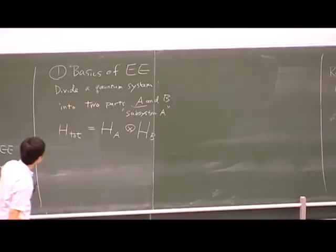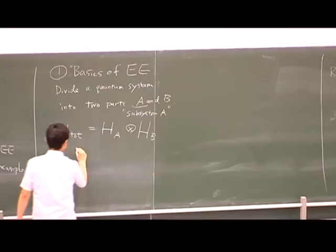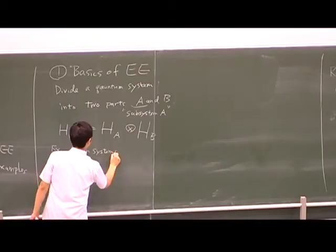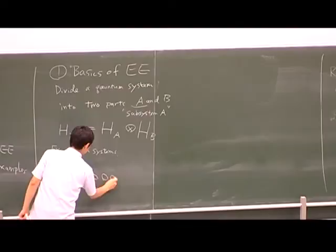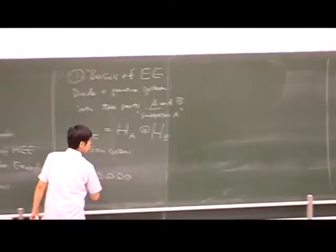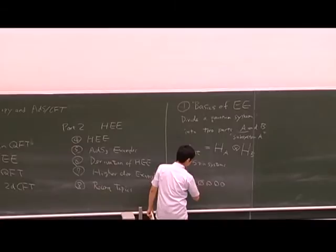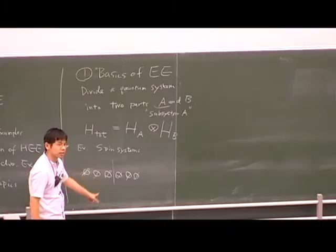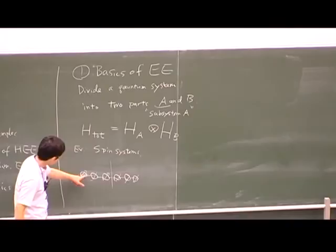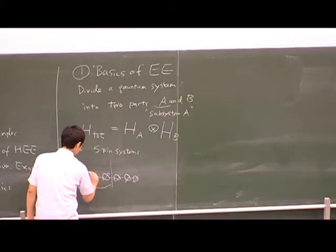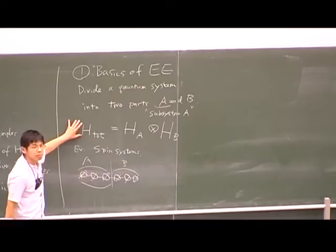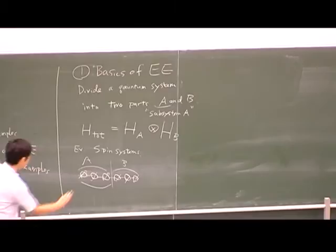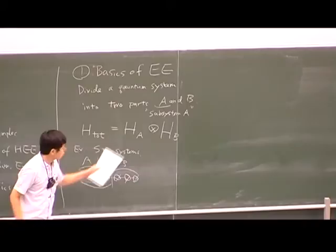A basic example is some spin system — for example, a spin chain. You can have several spins extended in one direction, or higher dimensional versions. We have some spins aligned, and we just artificially cut some part: we call this part A and the other part B. They are still interacting — for example in an Ising model — but we just artificially say this part is A and the other is B. Then automatically we have the direct product structure of the Hilbert space. There are many different choices of A and B.